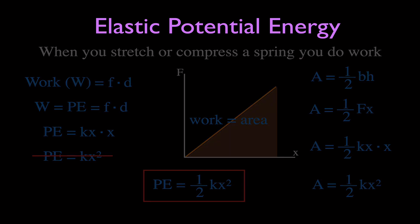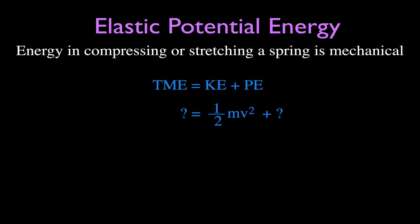We can now substitute back into our equations. The kinetic energy is one-half mv squared, and the potential energy is one-half KX squared, where K is the spring constant. We can now go on and derive the term for the total mechanical energy.